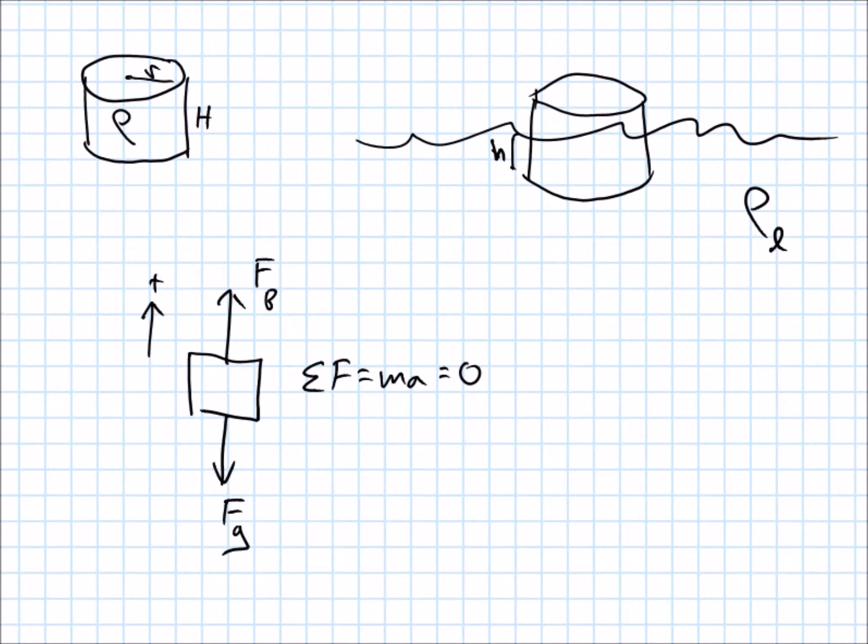And I'm going to say up is the positive direction. So 0 equals, now we list out the forces, right? The force of buoyancy minus the force of gravity. So just looking at this part here, 0 equals force of buoyancy minus force of gravity. Rearrange that, we get that the force of buoyancy must equal the force of gravity.